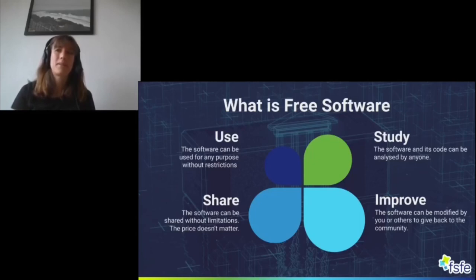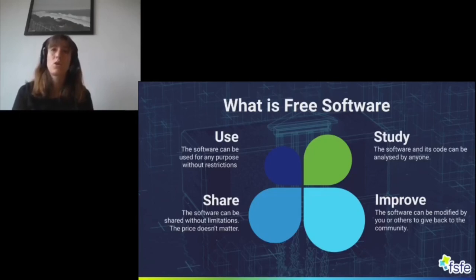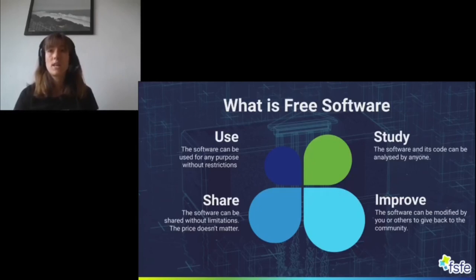You could also pay somebody else to do this for you if you're not a coder yourself. You could pay a company or an individual to add a feature to the software and adapt it to your needs, and then you could also give something back to the community and share the improved version of the software. Those are the four freedoms granted by every free and open source software license.